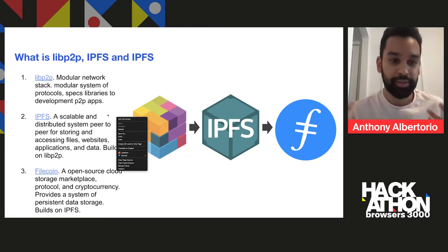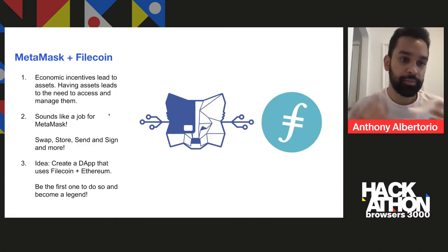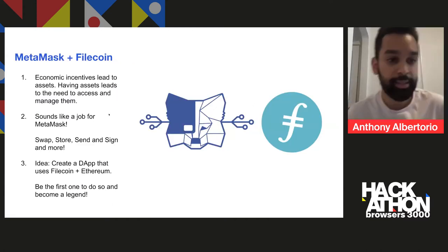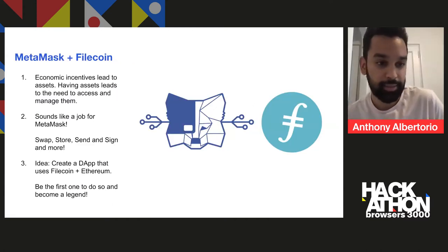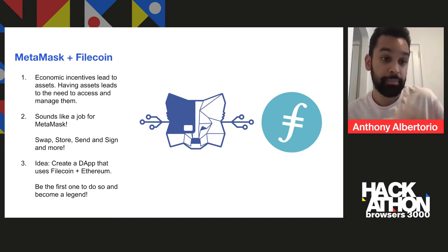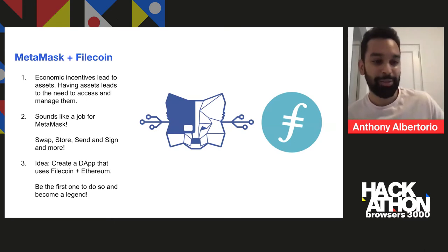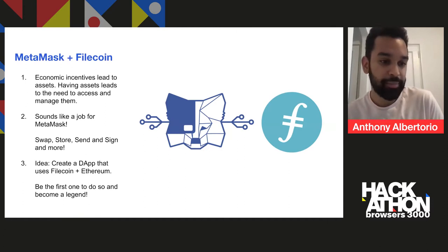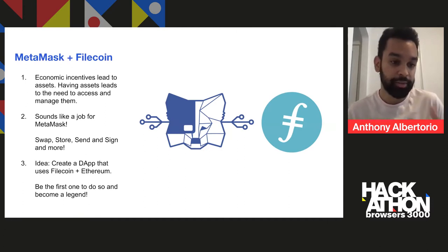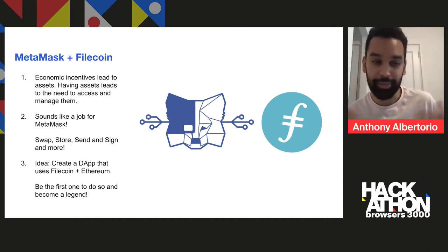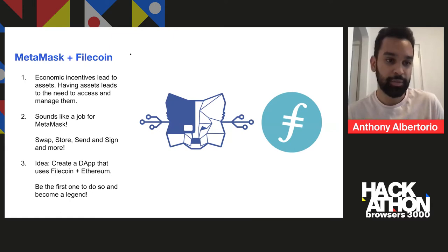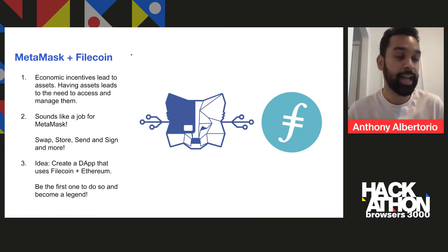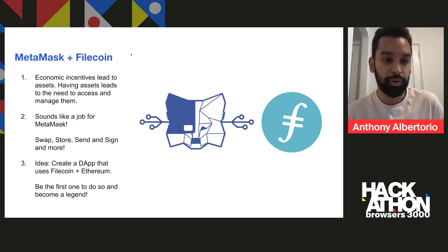That creates an interesting thing: economic incentives lead to assets, and these assets lead to the need to manage and access them. Sounds like a job for MetaMask — swap, store, send, sign, and now more. So a cool idea would be: can you create a DApp that uses Filecoin and Ethereum? You'd be one of the first ones to do so. That's really the context of why you would need a snap for Filecoin.